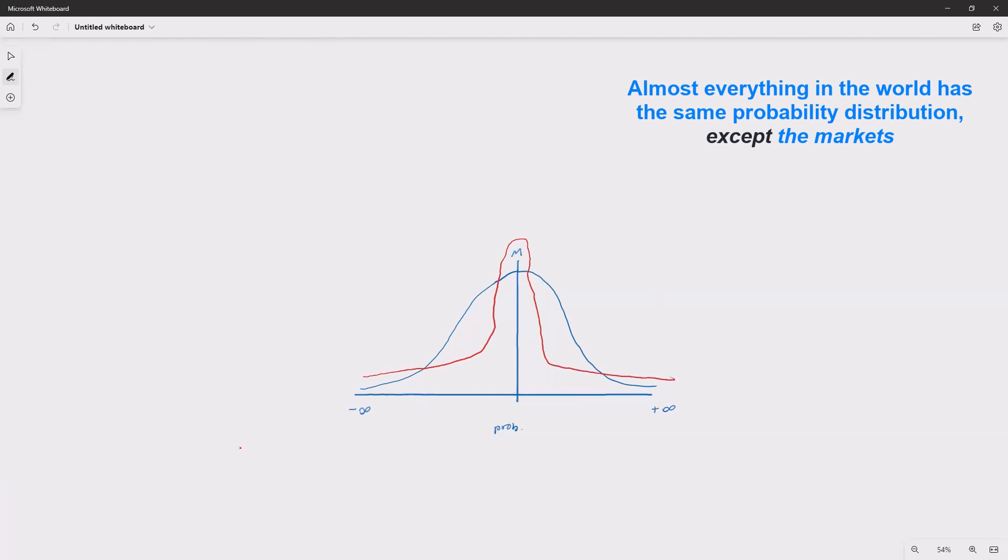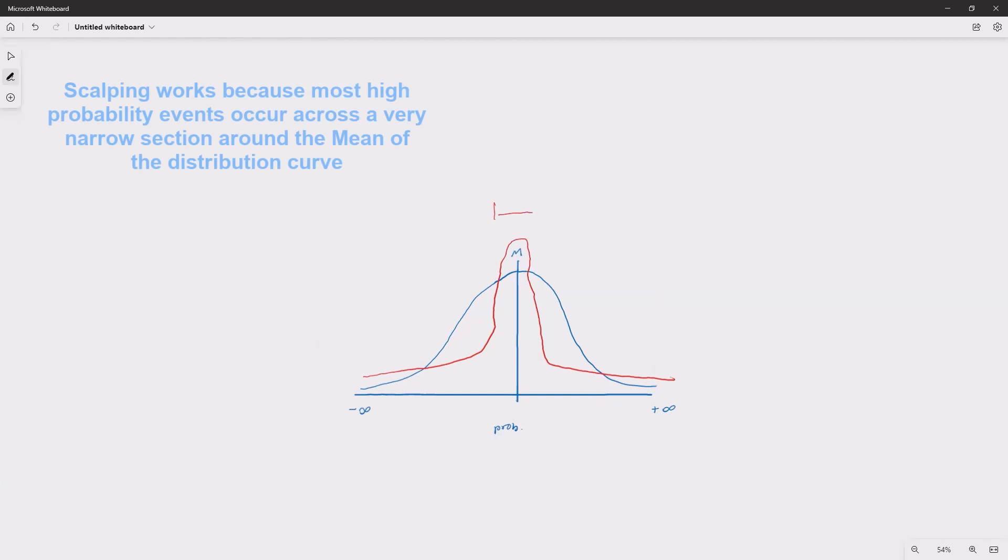And goes here. So there are a few characteristics here that are important. One is this is why scalping works. The majority of your trades are going to be in this range here because the probabilities are mostly gathered around the mean or the average. So there's an area here.